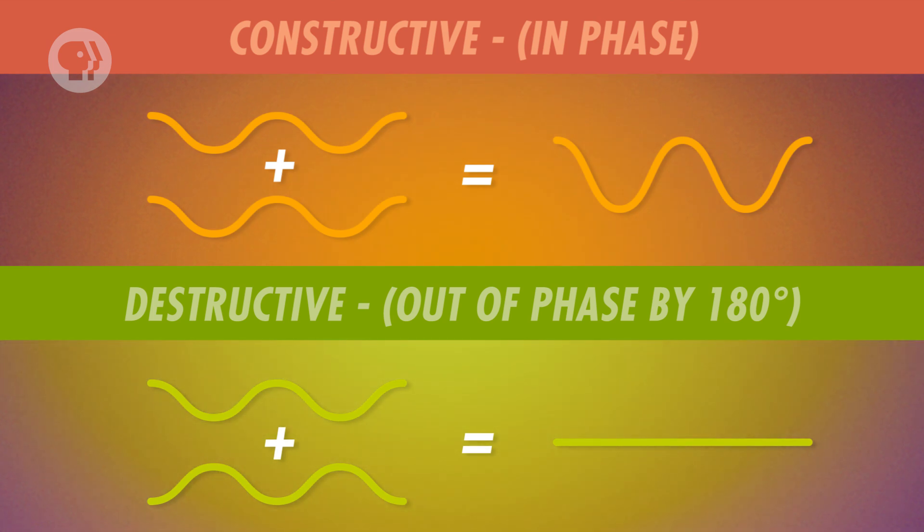And when a wave is out of phase by 180 degrees, it's destructive, with the crests and troughs cancelling each other out. The resulting destructive interference is seen in the dark spot at the center of the lens.